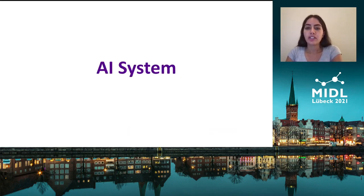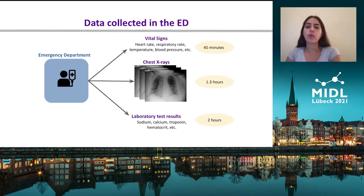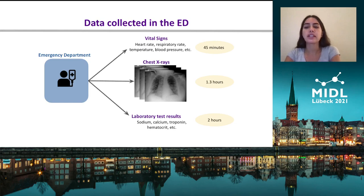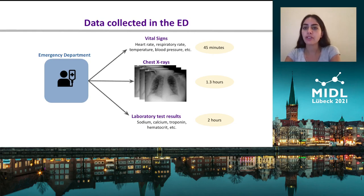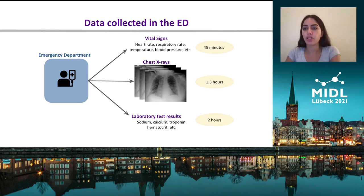Now, here is an overview of the data that gets collected in the ED. This includes vital signs, chest x-rays, and laboratory test results. We decided to focus on chest x-ray images because they're considered a primary tool of patient triage, especially during the pandemic, and they're cheap and easy to obtain. They also minimize the risk of infecting imaging suites compared to other imaging modalities, such as CT scans.